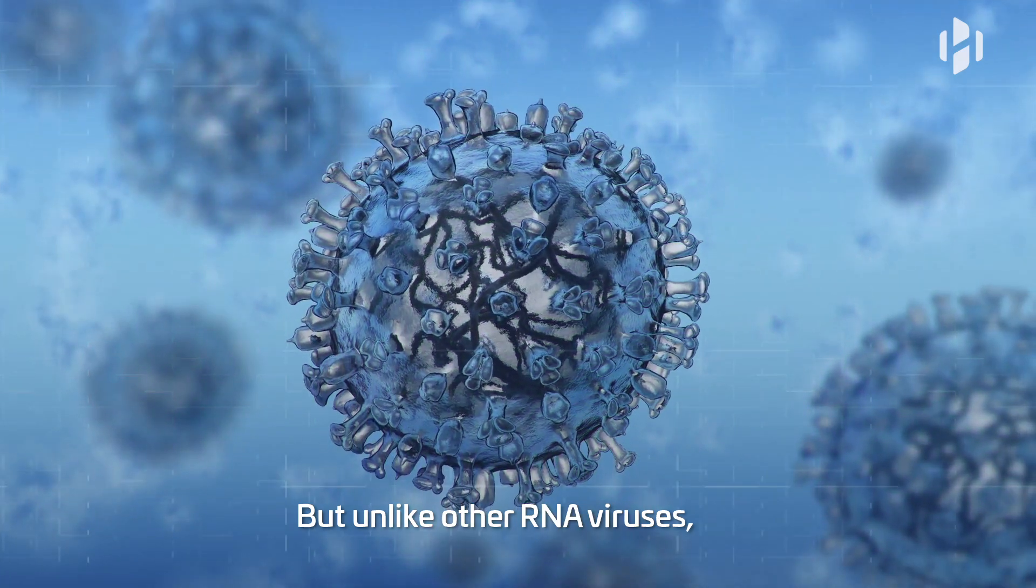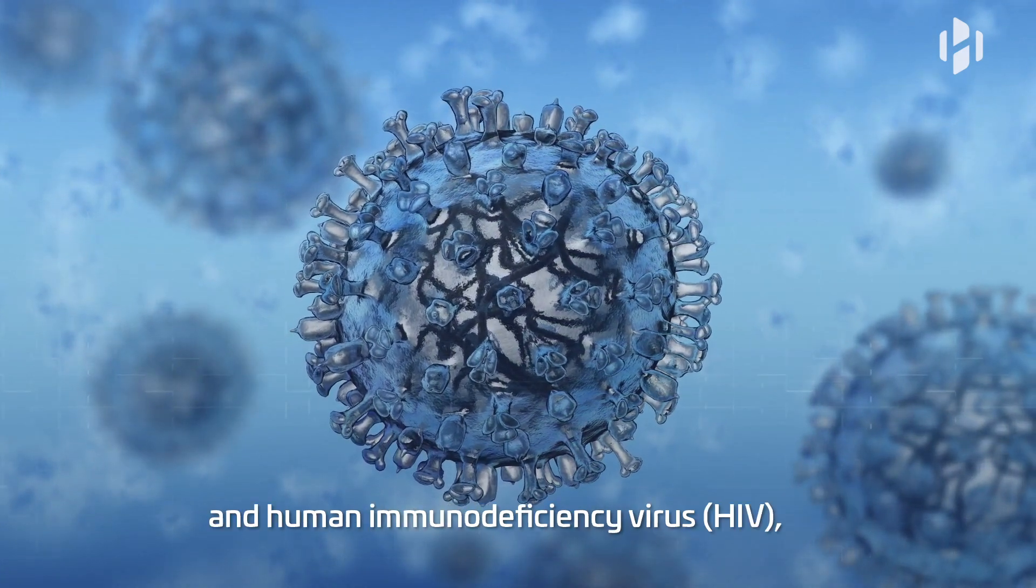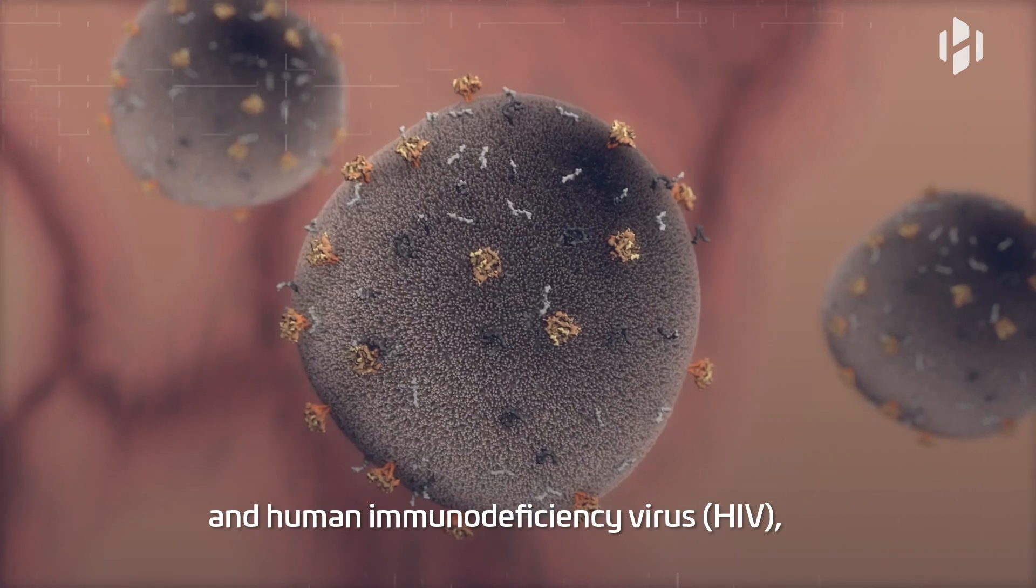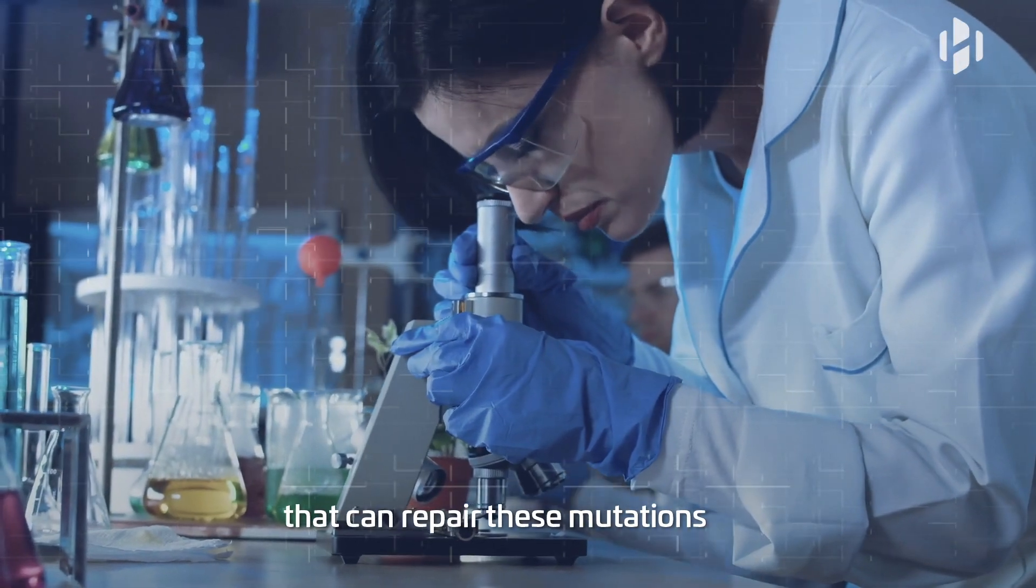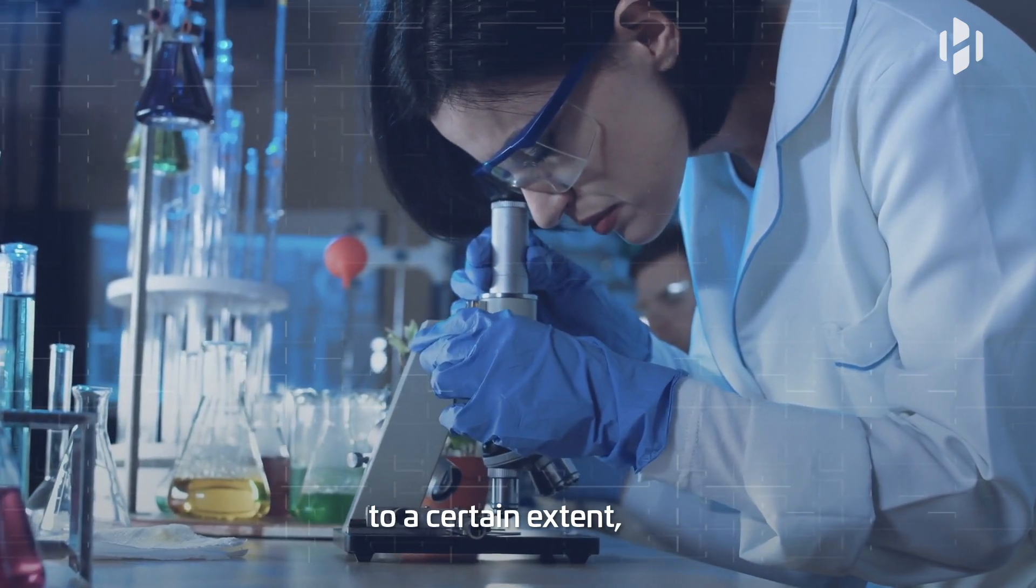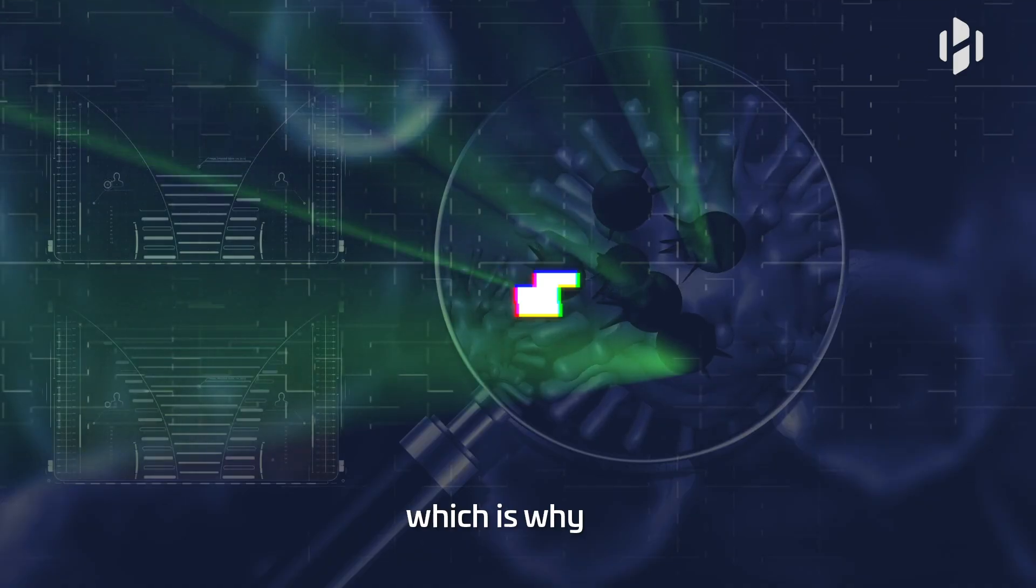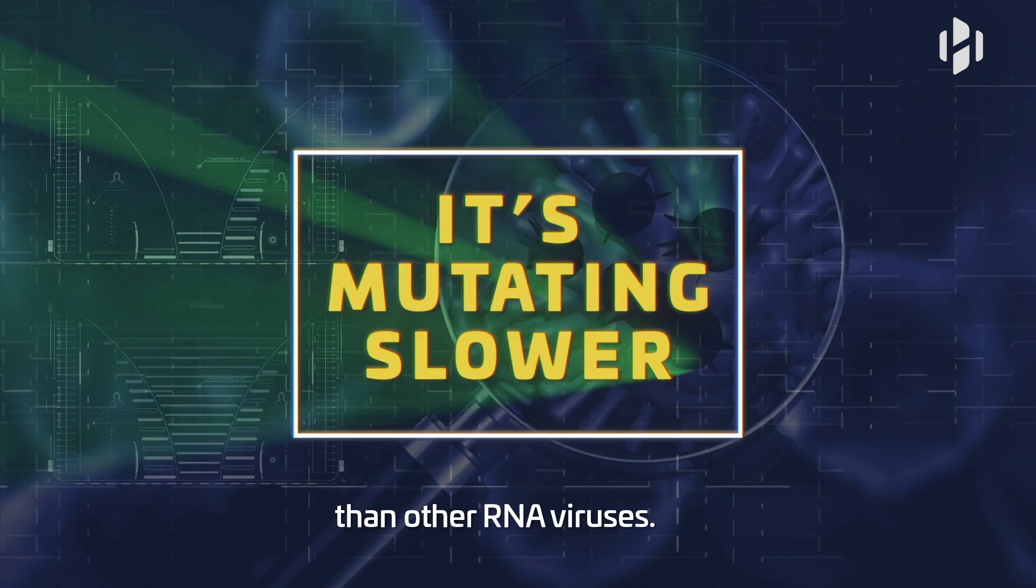But unlike other RNA viruses such as influenza virus and human immunodeficiency virus, SARS-CoV-2 has enzymes that can repair these mutations to a certain extent, which is why it's mutating slower than other RNA viruses.